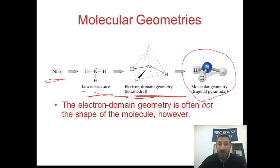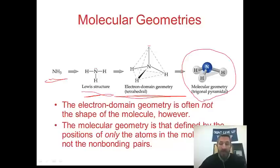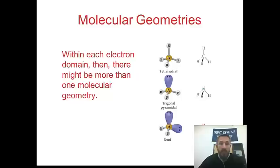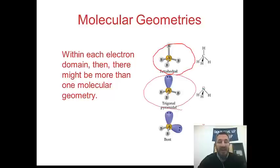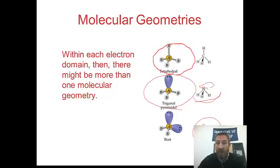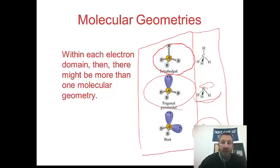Electron domain geometry is often not the shape of the molecule. The molecular geometry is defined by the position of the atoms — you're looking at the bonding and lone pair electrons. With each electron domain, there might be more than one molecular geometry. For example, on your sheet there's a tetrahedral arrangement for CH4, NH3, and water — all have four things around the central atom. But when you look at the molecular geometries, they end up having three different shapes.